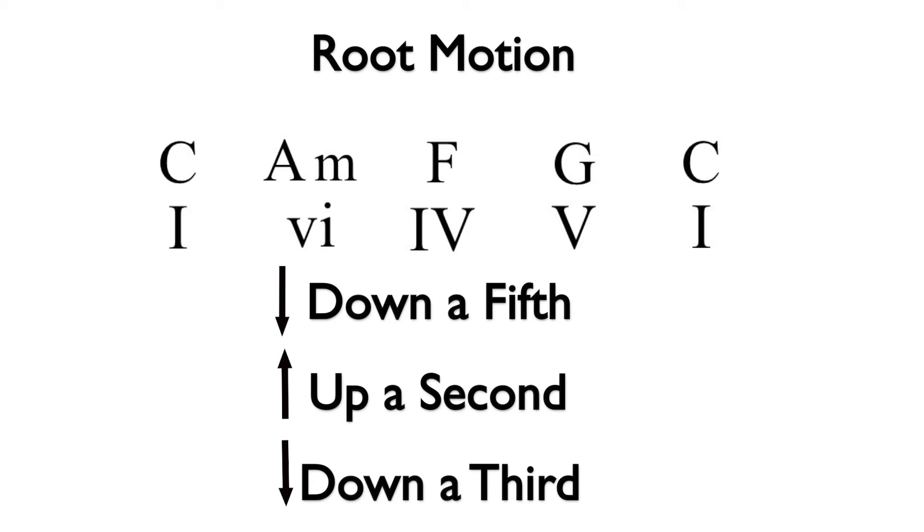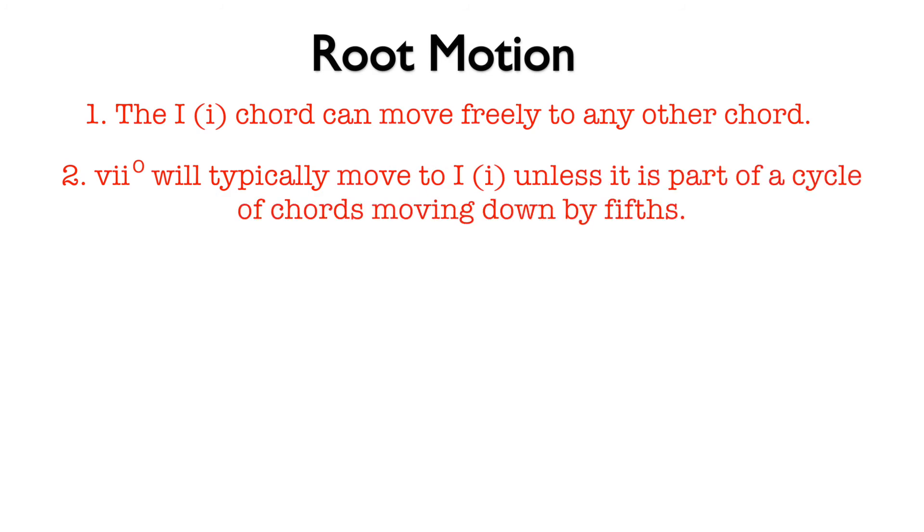In addition to the common root motions, there are some additional tendencies that common practice and standard jazz composers observe when creating chord progressions. First, the I chord can move freely to any other chord. Second, vii diminished will typically move to I unless it is part of a cycle of chords moving down by fifths.